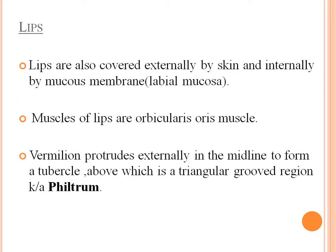Lips are also covered externally by skin and internally by the mucous membrane, the labial mucosa. The muscle of the lip is the orbicularis oris. The vermilion protrudes externally in the midline to form the tubercle, above which is a triangular groove region known as the philtrum.